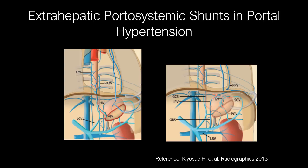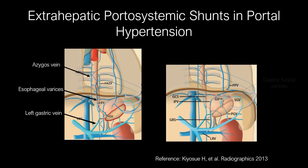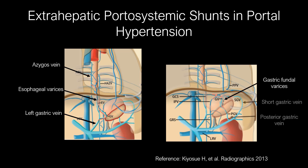Extrahepatic portosystemic venous shunts are commonly seen in portal hypertension. For example, esophageal varices communicate the left gastric vein to the azygous vein. Also, gastric fundal varices communicate the short gastric vein and posterior gastric vein from the portal venous circulation to the inferior phrenic vein in the caval circulation.